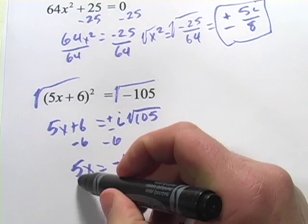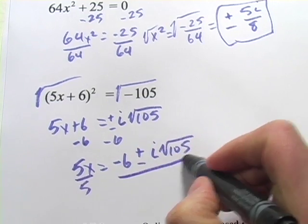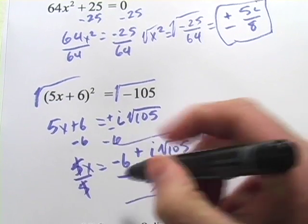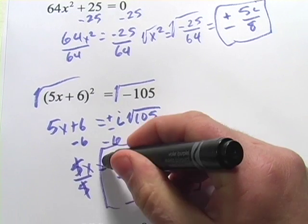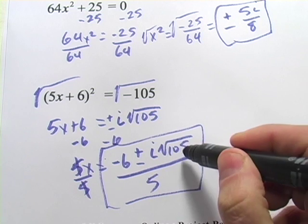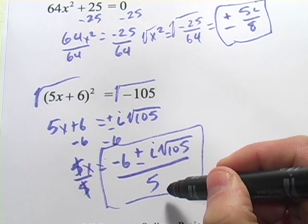So I'm going to write this as negative 6 plus or minus i times the square root of 105. And then finally, to solve for x, we just need to divide both sides by 5. And this is our answer: negative 6 plus or minus i times the square root of 105 over 5.